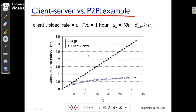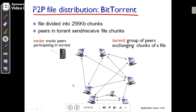Here you can see a comparison of client-server versus peer-to-peer: minimum distribution time versus number of clients. In client-server, the distribution time increases linearly with the number of clients. But in peer-to-peer architecture, after a certain number of clients, the minimum distribution time remains approximately the same as N increases. This is the key advantage of peer-to-peer file distribution over client-server.